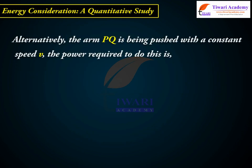Alternatively, the arm PQ is being pushed with a constant speed V. The power required to do this is P = FV = B²L²V²/R.